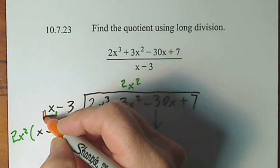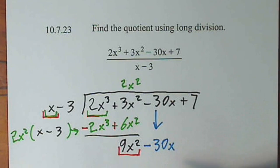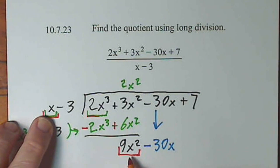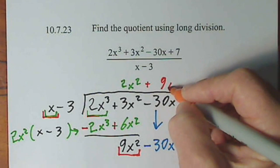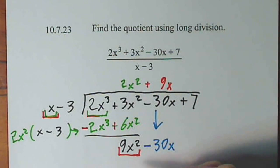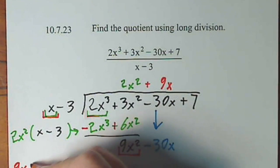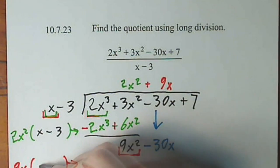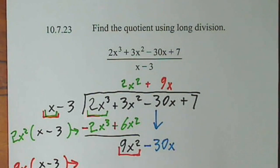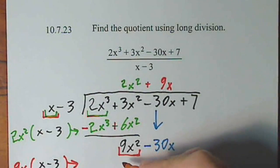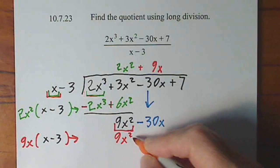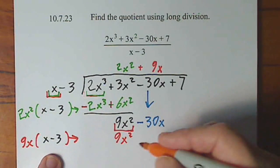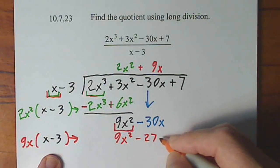We focus again on the first term here. So you look at the first term and the first term. How many times does x go into 9x squared? It goes in 9x times. So I'm going to say 9x times x minus 3, and when I distribute 9x to each term, I get 9x squared. And when I distribute 9x to negative 3, I get negative 27x.